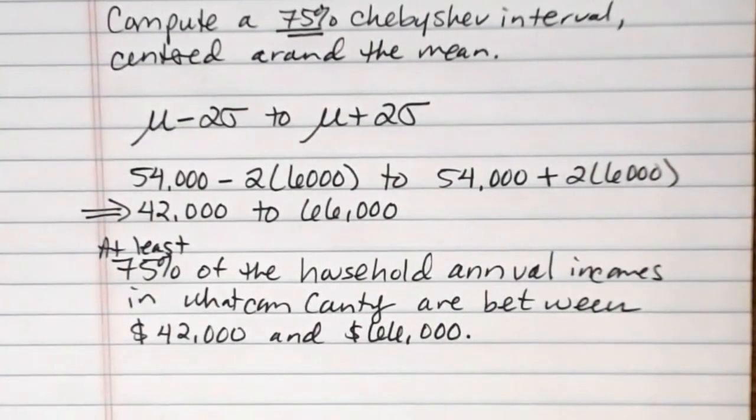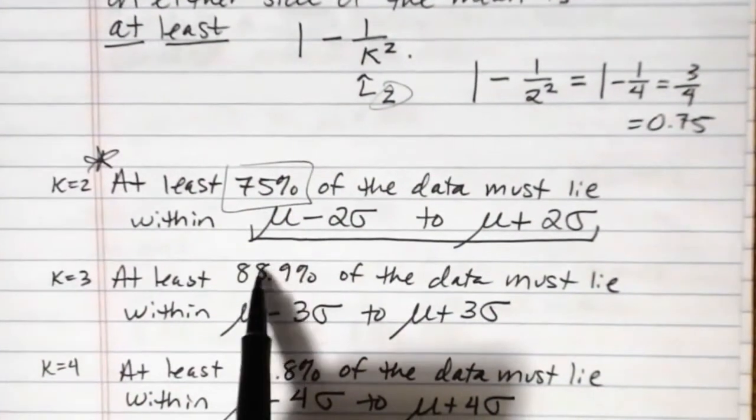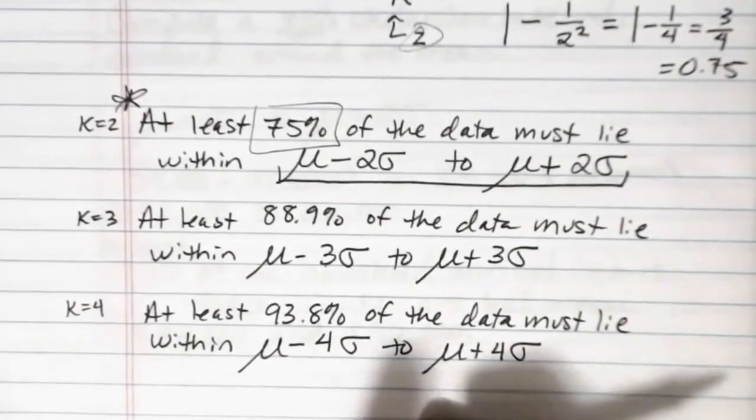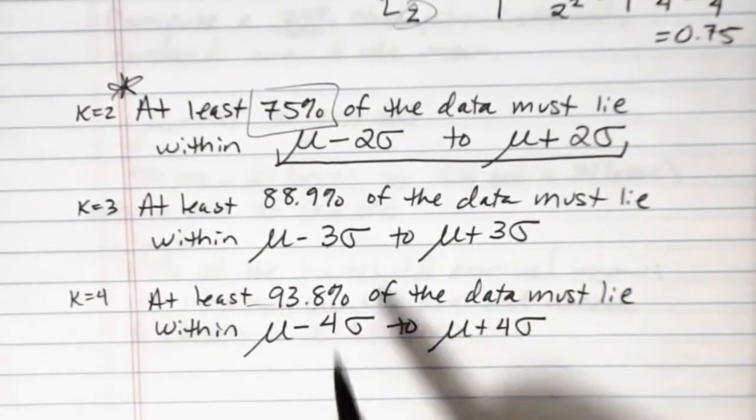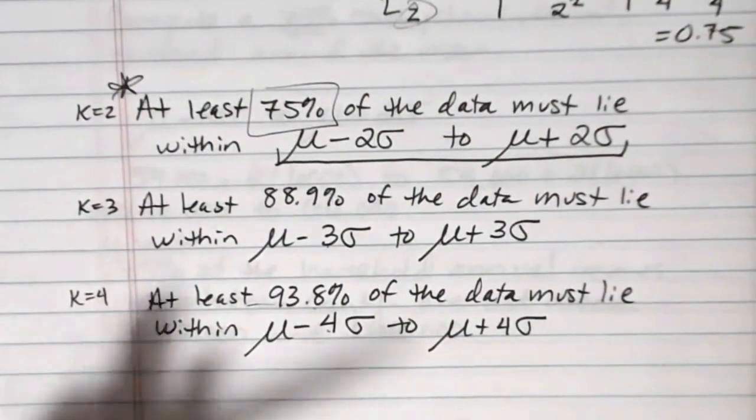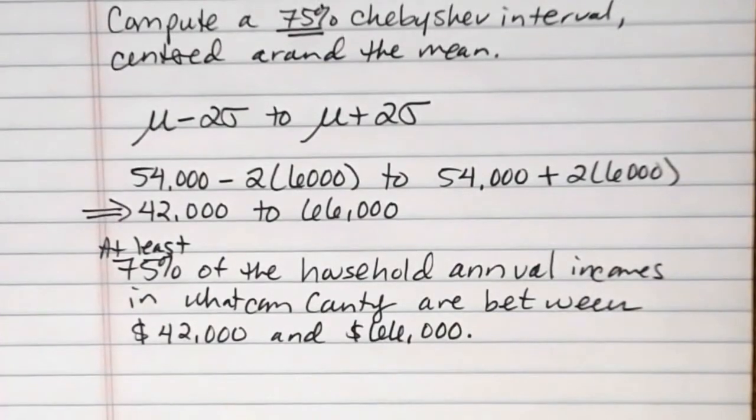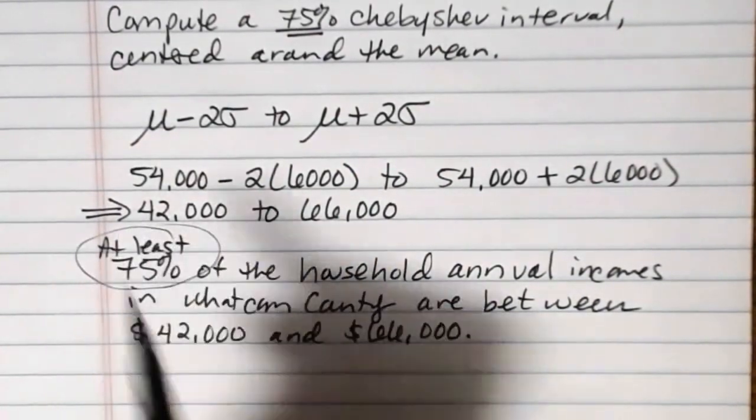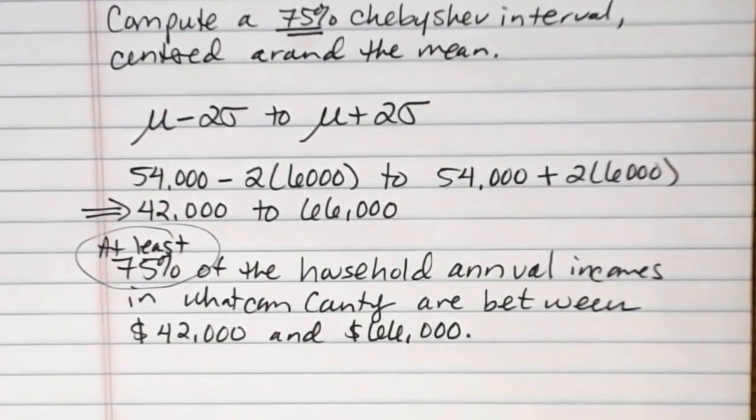Now if we wanted to find 88.9% we would simply go out three standard deviations on either side of the mean and if we wanted to find 93.8% we'd go out four standard deviations on either side. But this is the idea of how to use Chebyshev's theorem to find a Chebyshev interval about the mean. It just gives us an entire range of values where we can expect to find a certain percentage of the data.